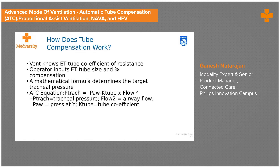Simply put, with ATC you feed in the ET tube size and the percentage of compensation you want. An algorithm then determines what additional pressure the machine will generate — without informing you — to overcome this imposed work of breathing. That is what ATC really does.